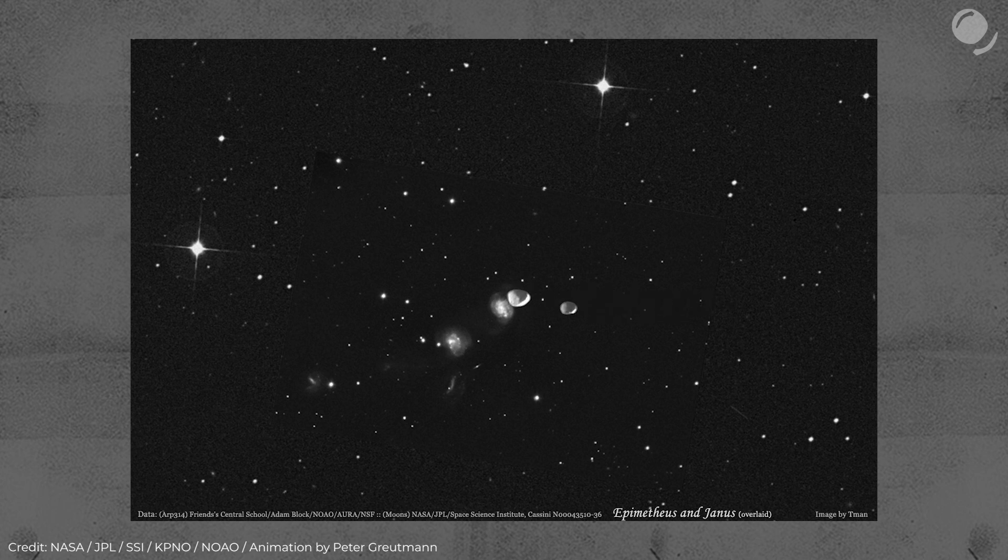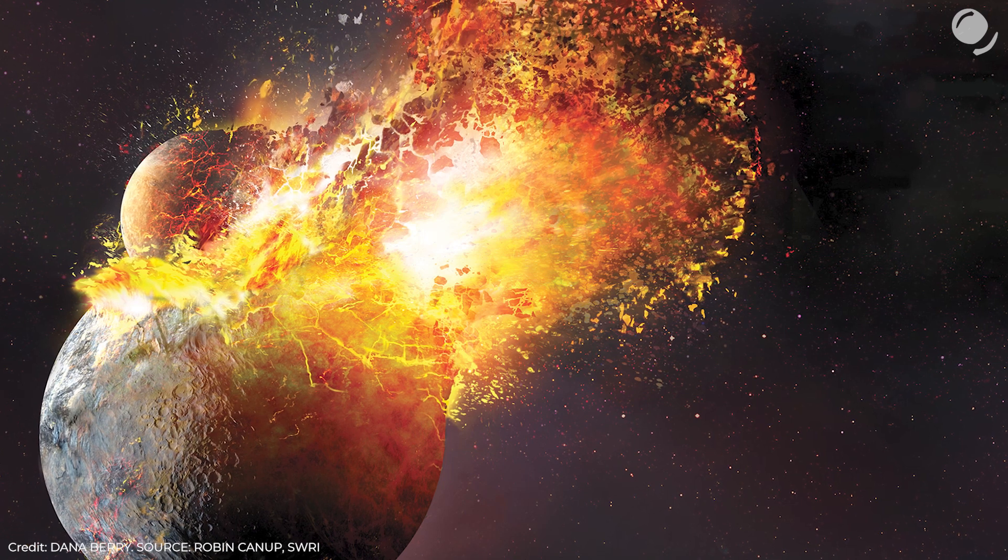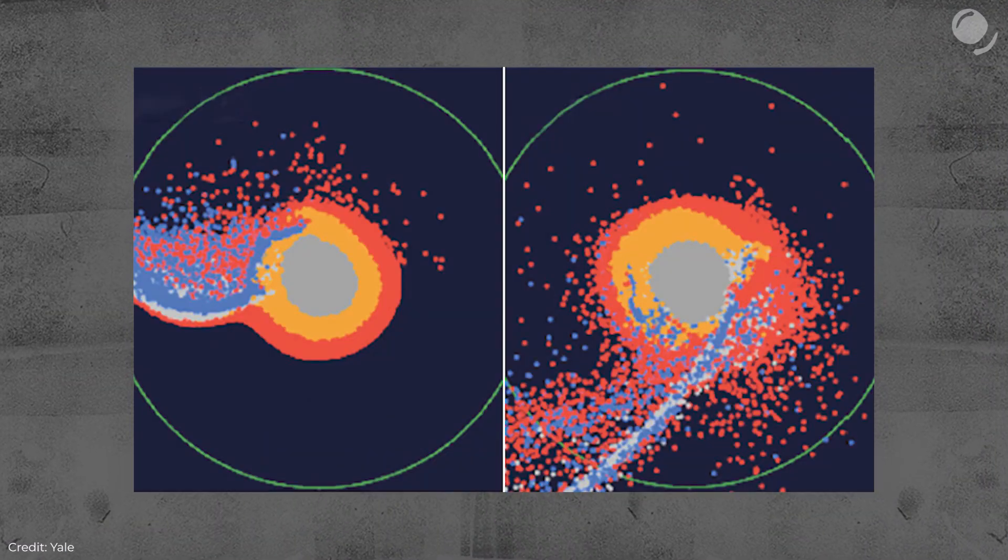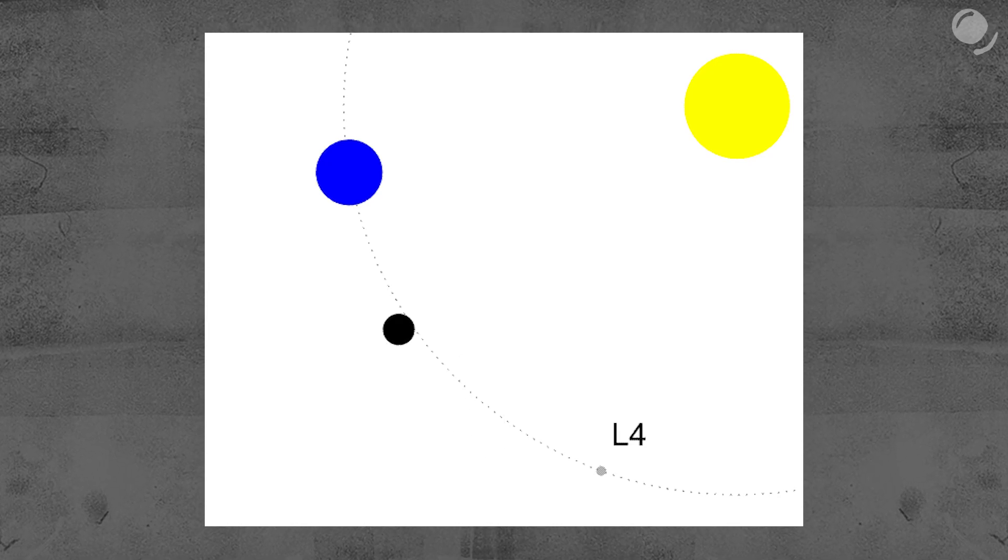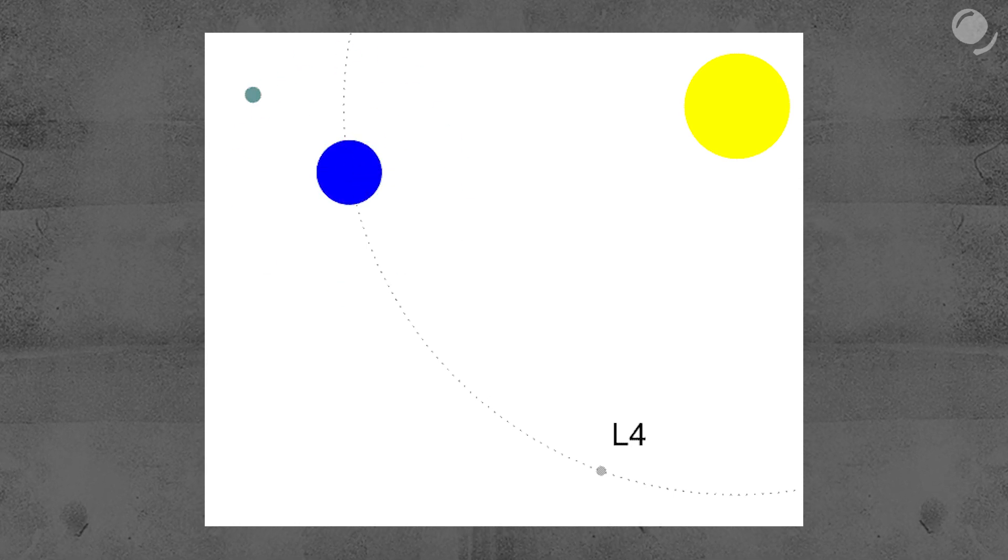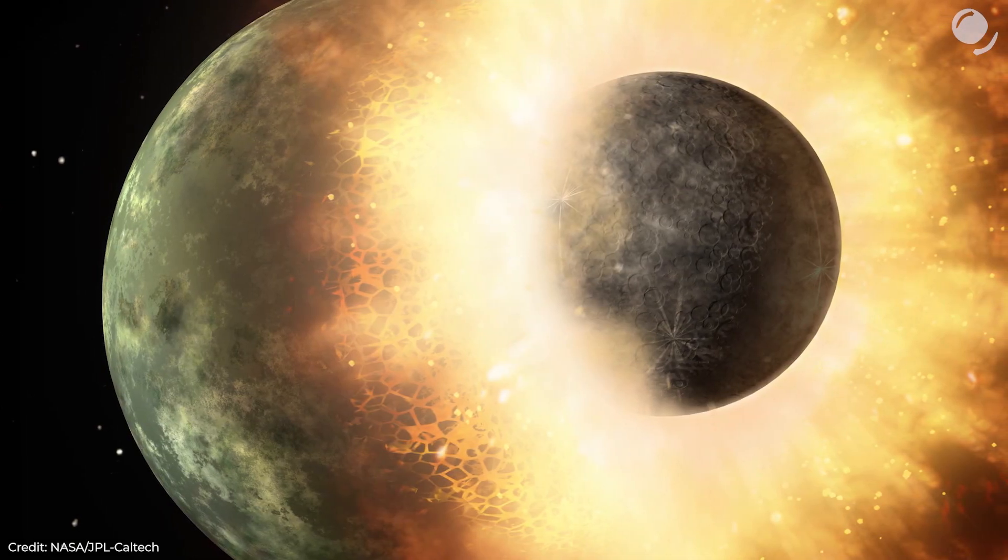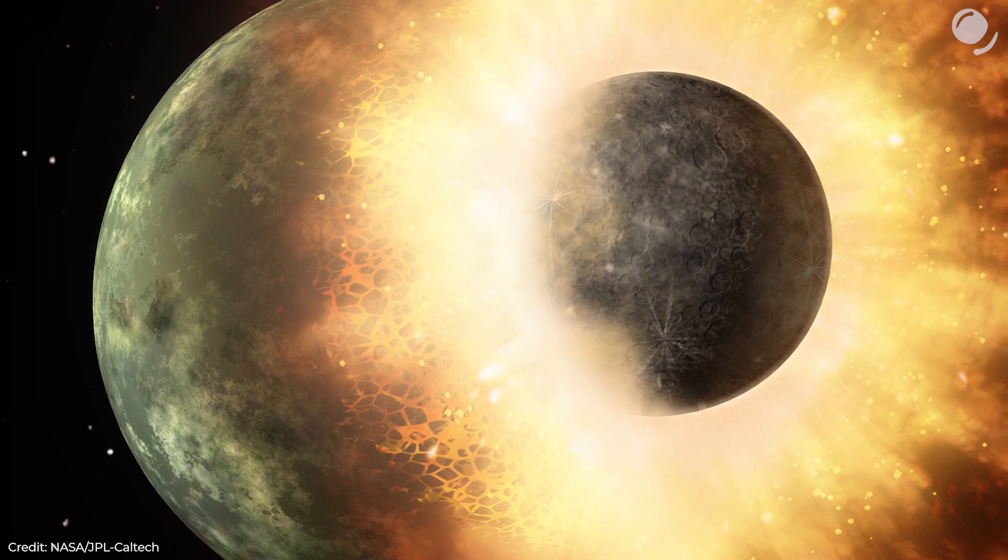But one more example has been right before our eyes all along. The moon. According to the main formation theory, the moon formed when a Mars-sized object collided with the young Earth. And the moon formed from the ejecta. And the hypothetical planet is called Theia. It could have formed at Earth's L4 point and then it was destabilized by other planets and collided with Earth. So it's quite possible that billions of years ago our planet actually shared its orbit but not with counter-Earth, but rather with Theia.